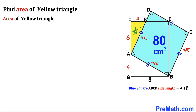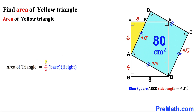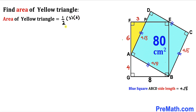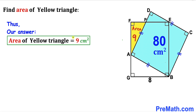For the final step, let's calculate the area of the yellow triangle using Area = ½ × base × height. Our base is 3 and our height is 6, so the area = ½ × 3 × 6 = 9 square centimeters. Thus the area of the yellow triangle AFP is 9 cm². Thanks for watching and please don't forget to subscribe to my channel for more exciting videos!